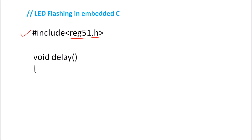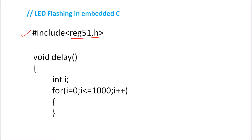We want to use the delay function, so write void delay and then a for loop. The variable i is declared as integer, and the loop runs: i equals 0, i less than or equal to 1000, i plus plus. If you want to increase the delay, increase this count; if you want to decrease it, decrease the count. Since we don't want any statement inside the for loop, we just open and close the curly brackets and end the delay function.